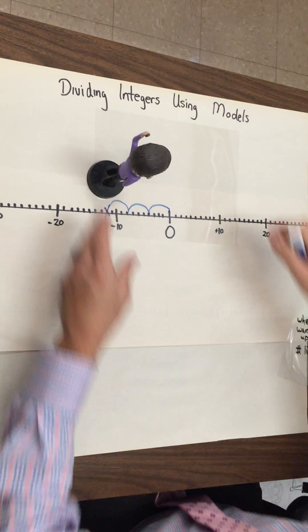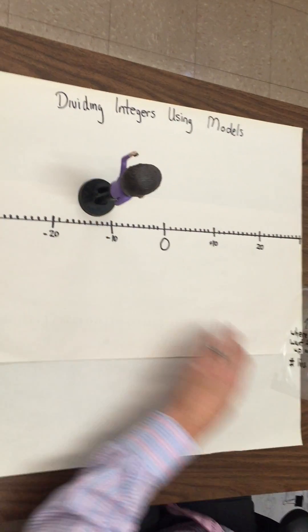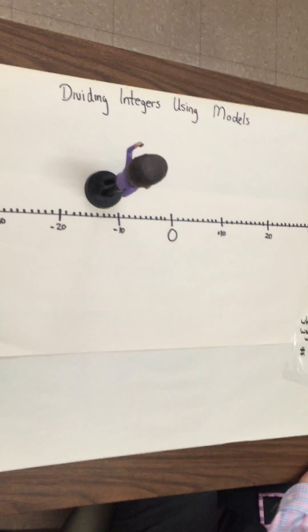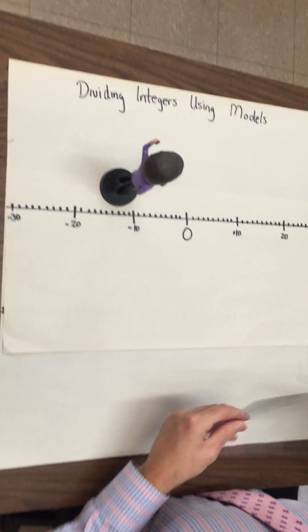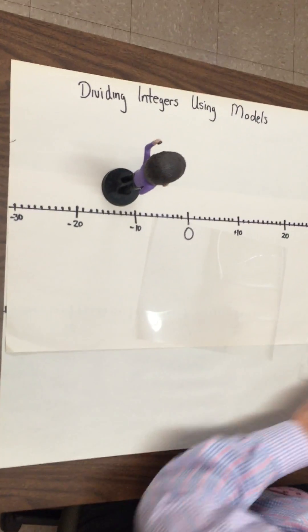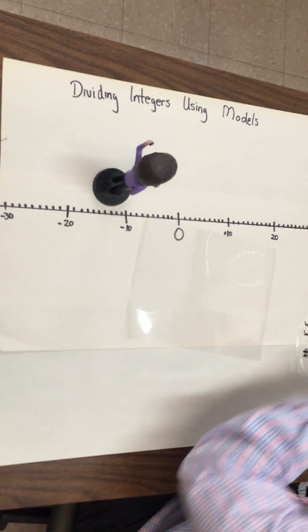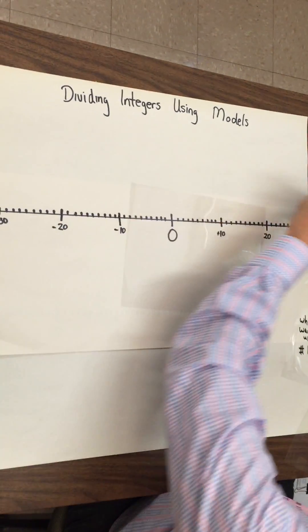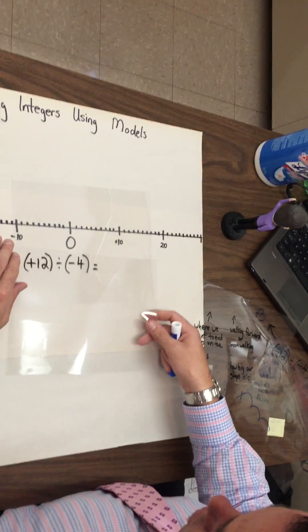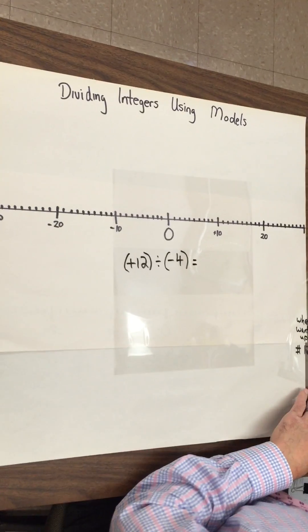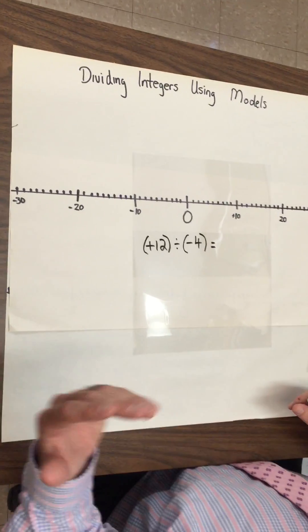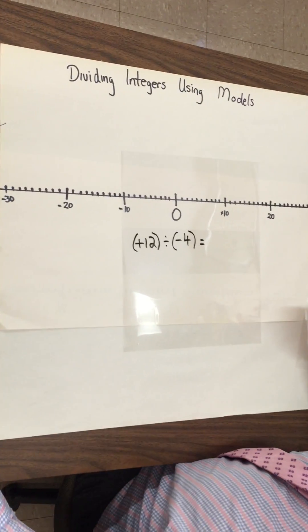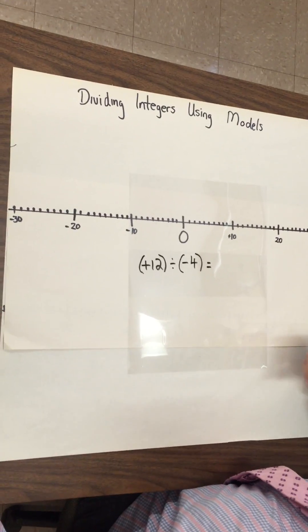Well, hopefully that helps you out, grade eights, with how to multiply. Or sorry, how to divide integers using a model. Let's try one last example, shall we? And I'm going to put it here on the board. Here we go. Positive 12 divided by negative four. I'm going to ask you to pause it at home and attempt this on a number line that you can draw beside you.